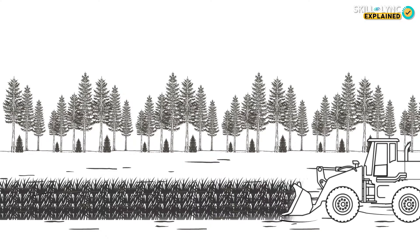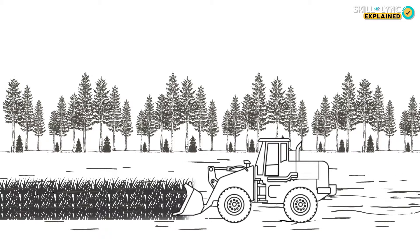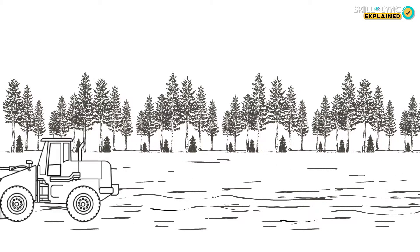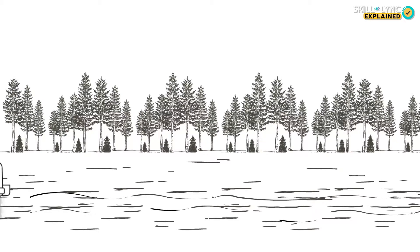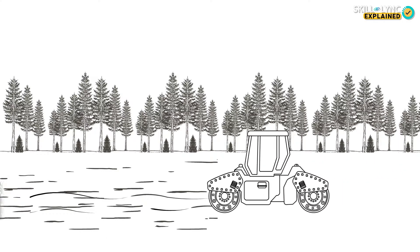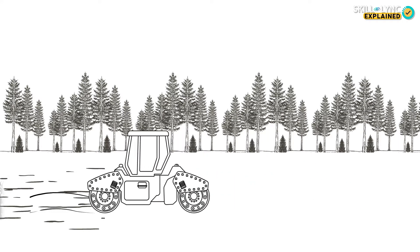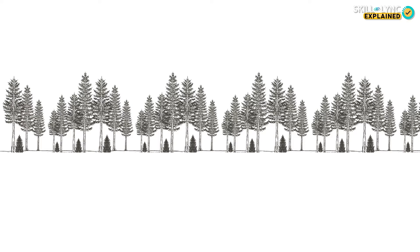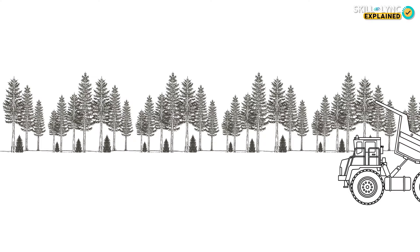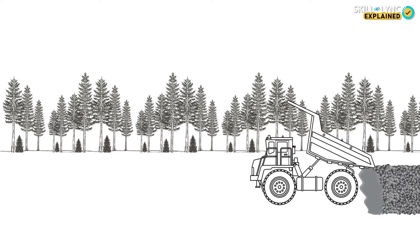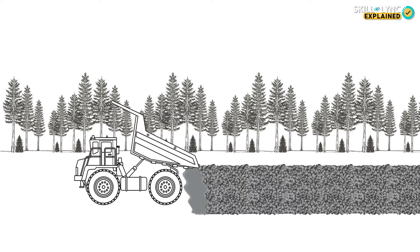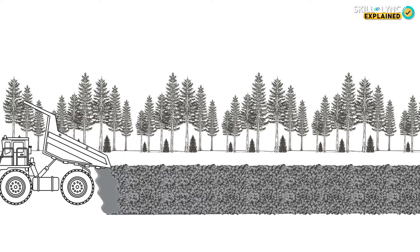The first step in laying roads is to clear the land of vegetation and level the area. The loose soil is then compressed to form a regular hard surface, which is further strengthened by adding stone and gravel. This process of readying the terrain to lay the roads is called earthwork.